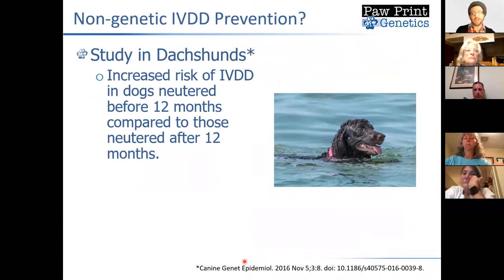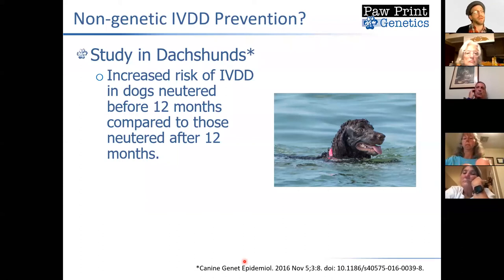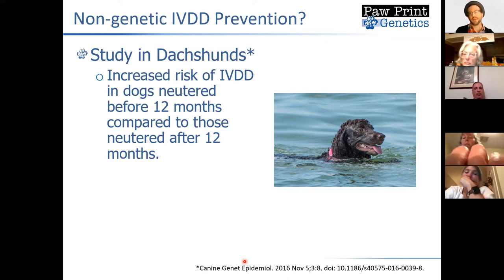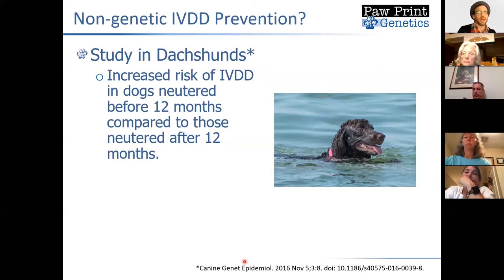There were questions about whether neuter status might play a role in dogs developing IVDD. We don't know for Boykins, but we do have some evidence — at least in the dachshund — that early neuters may result in an increased risk of IVDD as they age. Dogs neutered before 12 months of age appear to have a higher risk of IVDD than dogs neutered after 12 months. I don't know if this will necessarily hold true for Boykins, but theoretically it could.